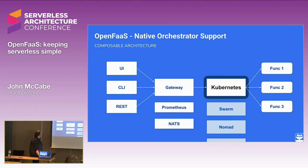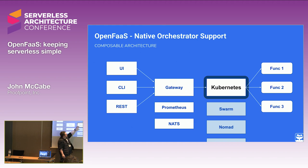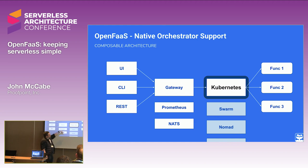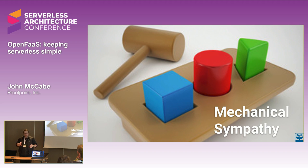We have a composable architecture: UI, CLI, and a REST interface to the gateway, which handles access to functions. We have Prometheus for metrics and Alert Manager hooked in for auto-scaling. We use NATS for asynchronous messaging. And we have a provider mechanism in the background where you plug in whichever system you want to work with - Kubernetes, Swarm, Nomad - pretty much anything can be plugged in. We try to be mechanically sympathetic with whatever we're using under the hood: work the way the underlying platform works.